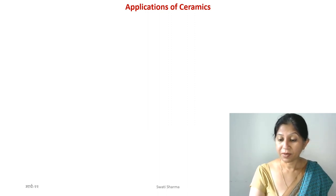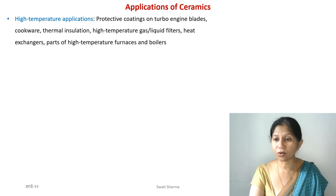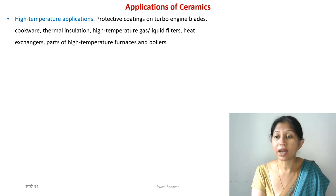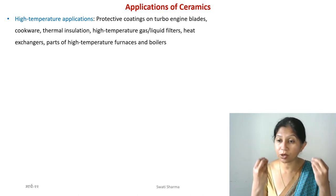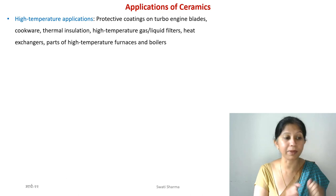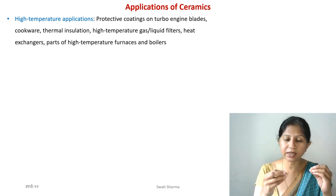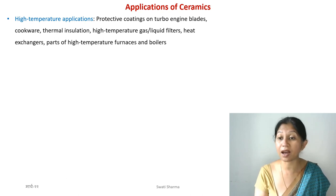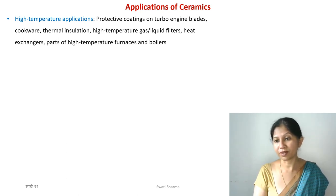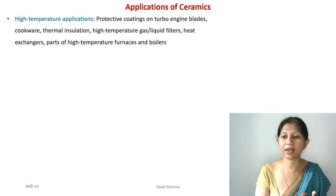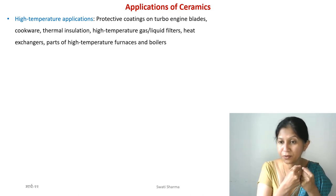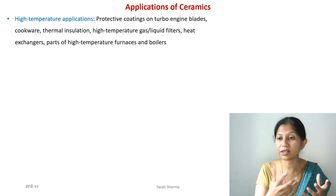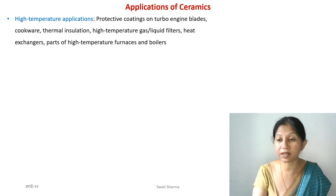Coming to the applications of ceramic materials, based on the properties we already know, we can determine the applications accordingly. Ceramics can withstand high temperatures, so high-temperature applications involve making anything that needs to be used at high temperature — either it will be made completely of ceramics or it will have a ceramic coating. For example, turbine blades are made of metals but often have a thin ceramic coating on top.